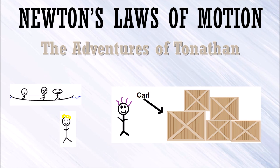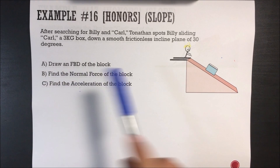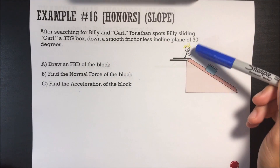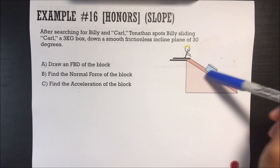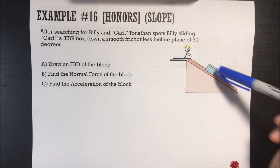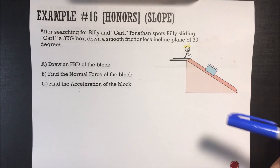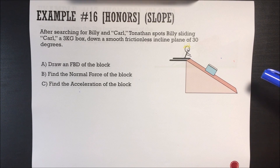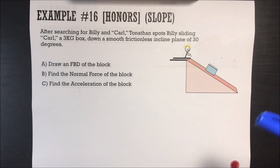Welcome back to Newton's Laws of Motion: The Adventures of Tonathan. We will be working on incline plane problems and finishing the story of Tonathan. After searching for Billy and Carl, Tonathan spots Billy sliding Carl, a 3kg box, down a smooth, frictionless incline plane of 30 degrees. Draw a free body diagram of the block, find the normal force of the block, find the acceleration of the block.